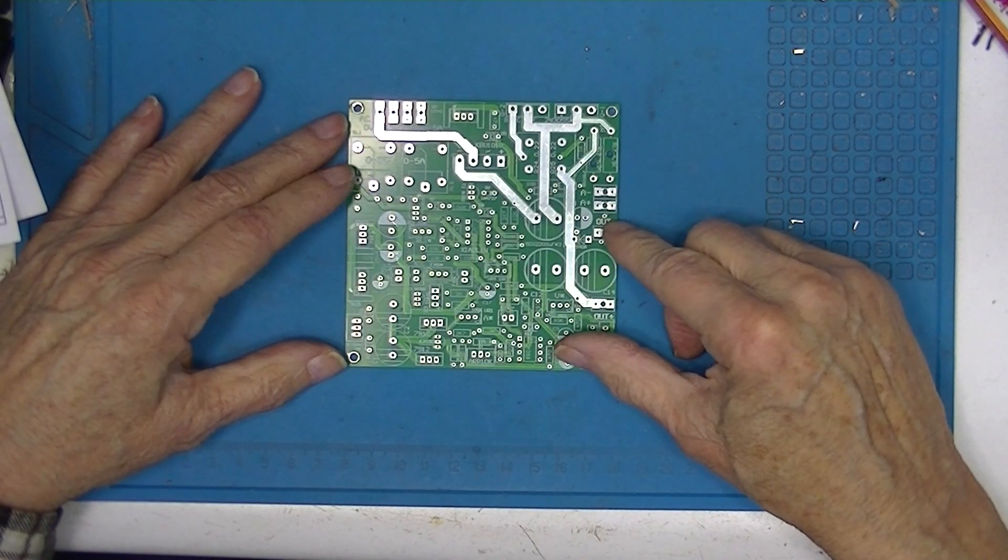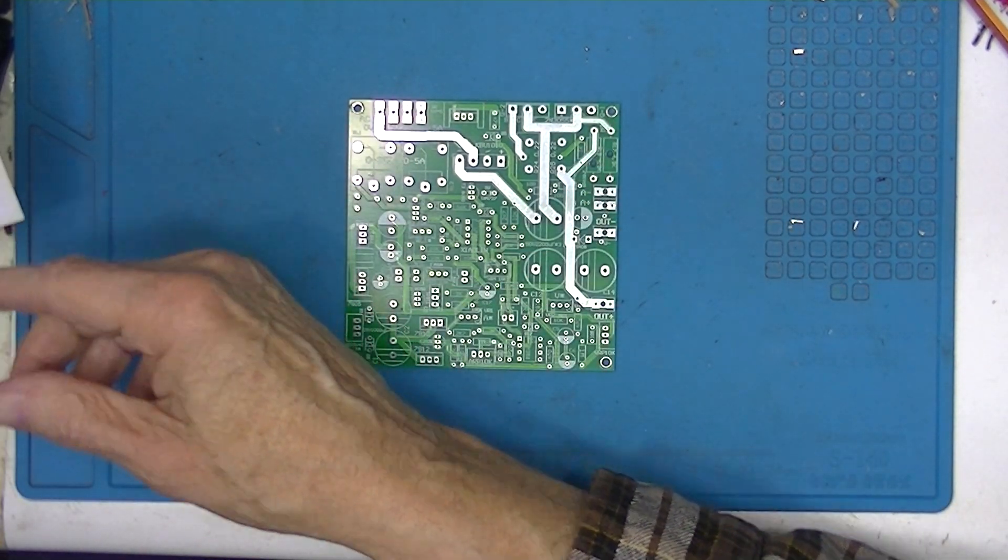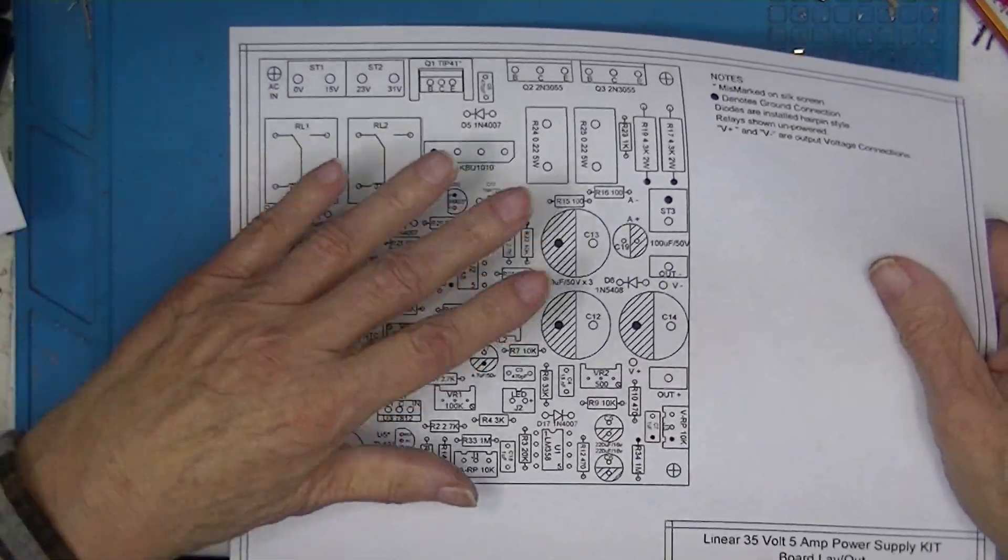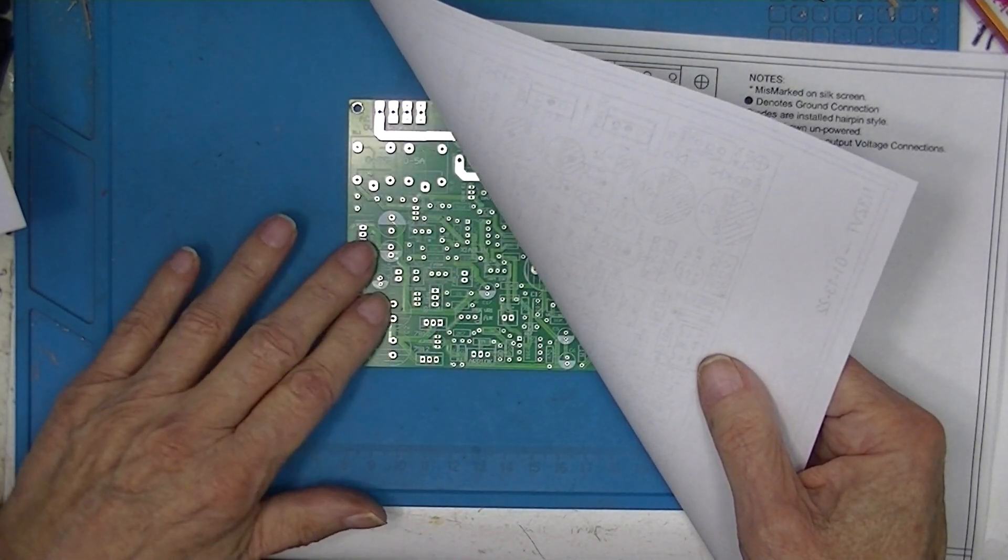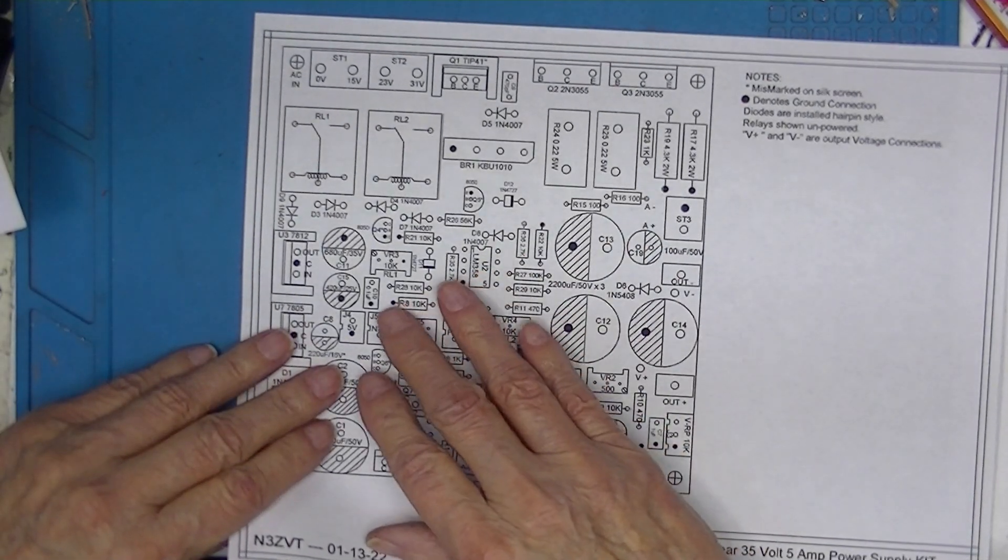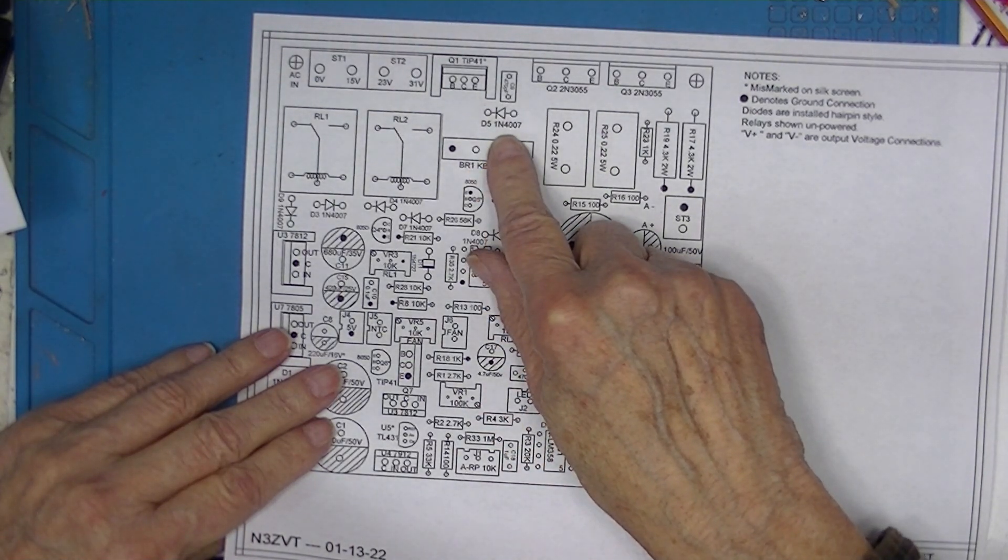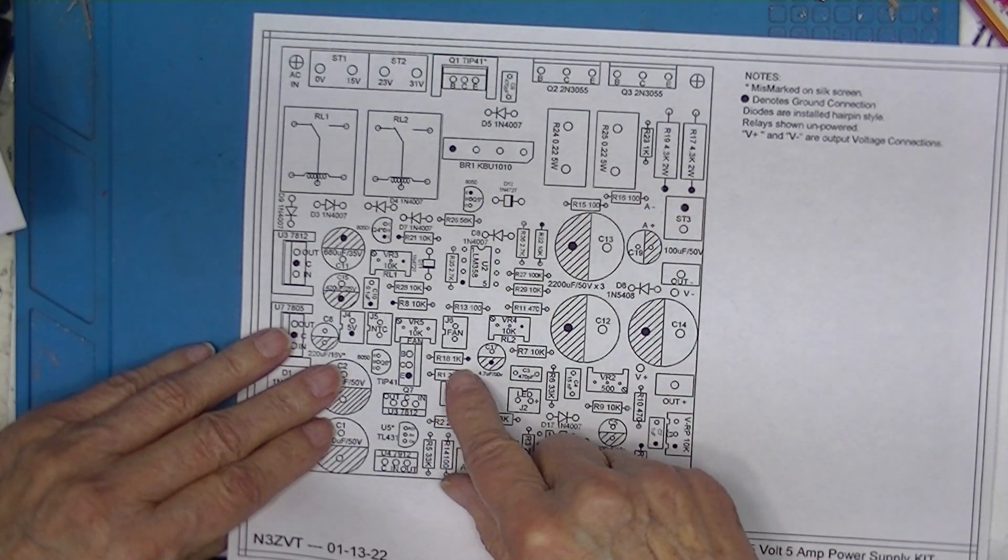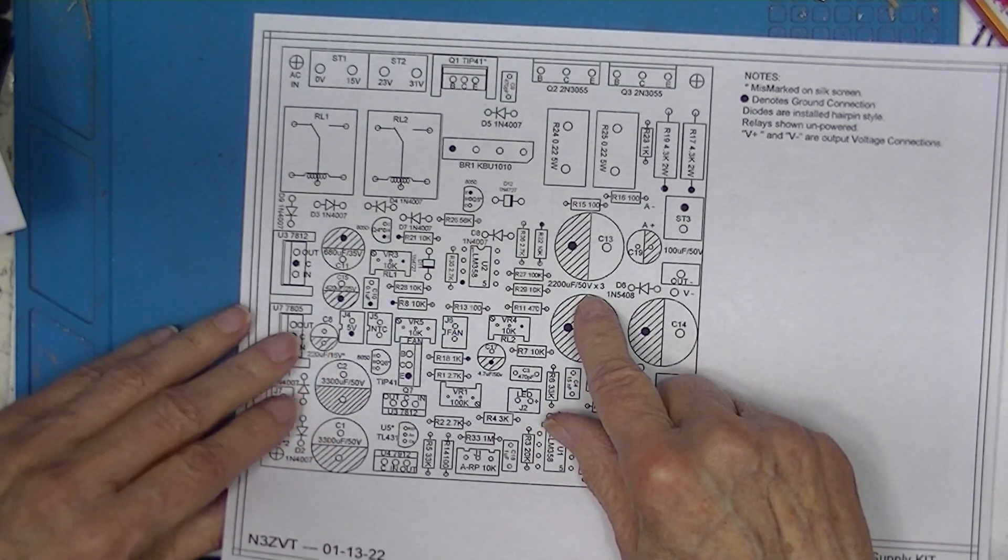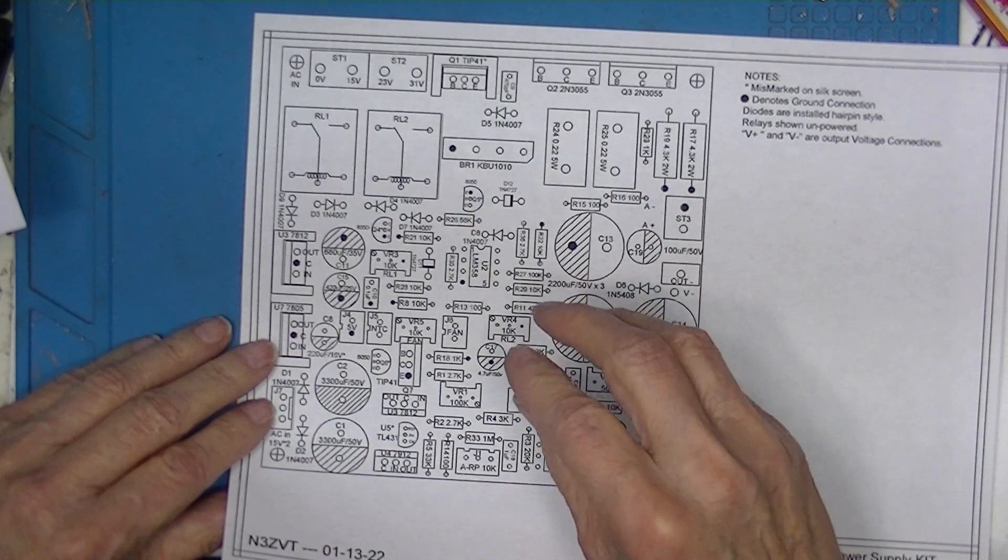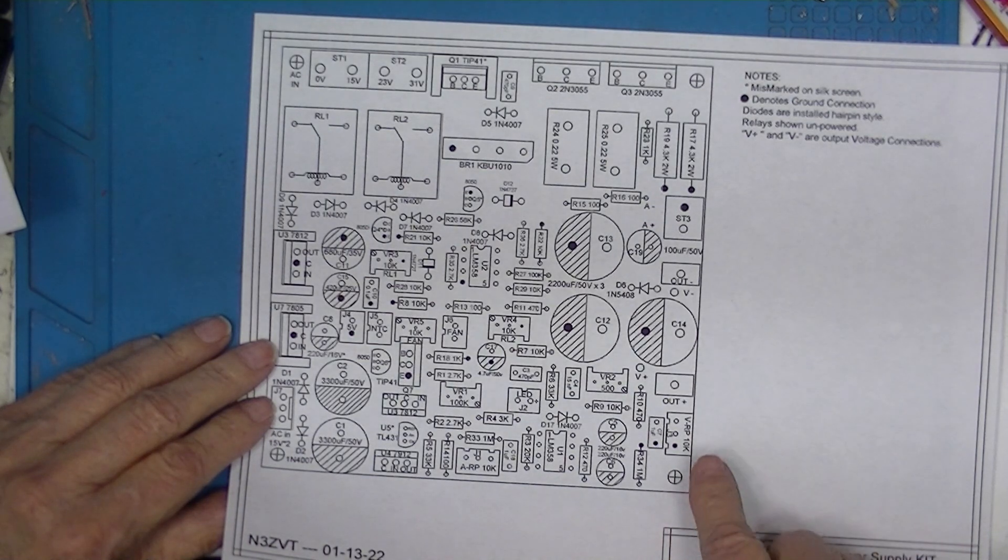As I try to do when I'm making a kit, I've developed some drawings. The first is an expanded board layout. Now the values are almost all here. Some component designations are here. On this sheet, everything is here. It's D5, one N4007, R18, one K. C12 is 2000 microfarad at 50 volts. So everything ties together value and the component designation. As well as screw terminals and jacks.